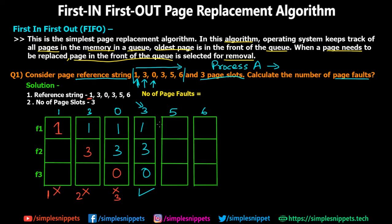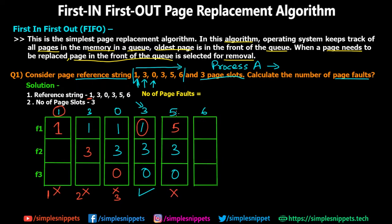Now the CPU wants page 5, which is not in the three memory slots, so we have to swap out one page. This is where FIFO comes in — we replace the page that came in first. Looking at the reference string order, page 1 was the very first brought into the frames and is still there. So we replace page 1 with page 5. Pages 3 and 0 remain. This is the fourth page fault.